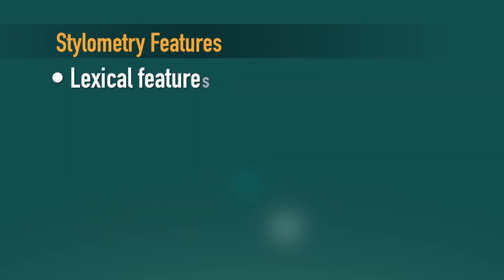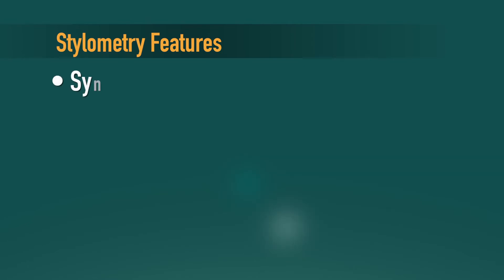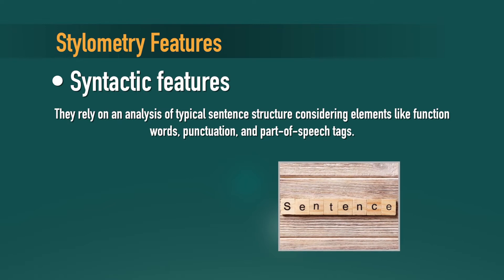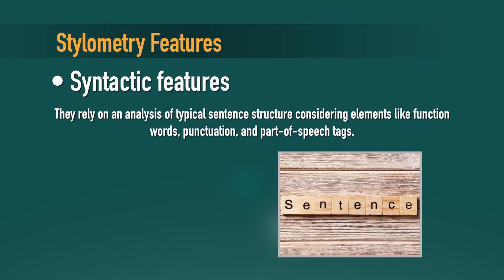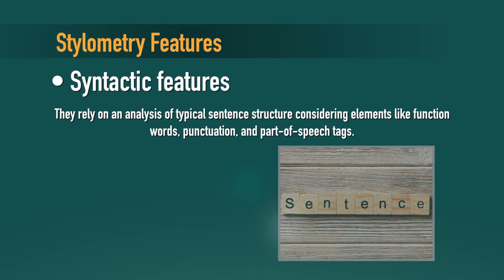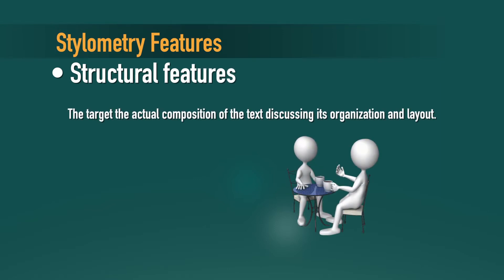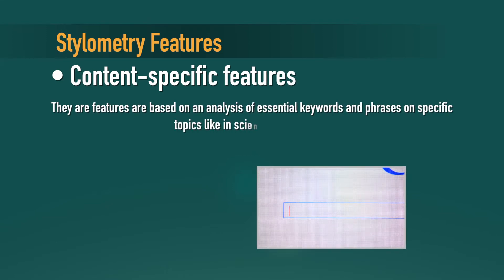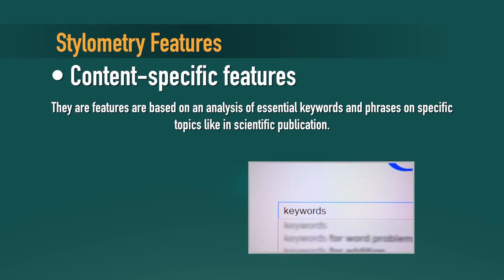Lexical features describe the semantics of the words used by the author. Syntactic features rely on the analysis of typical sentence structure, considering elements like function words, punctuation, and part-of-speech tags. Structural features target the actual composition of the text, discussing its organization and layout. Content-specific features are based on the analysis of essential keywords and phrases on specific topics, like scientific publications.